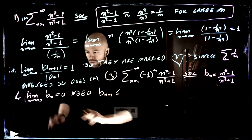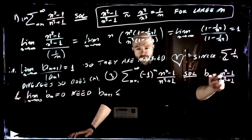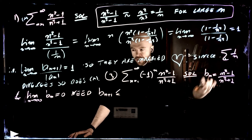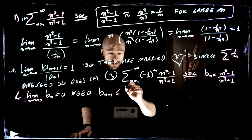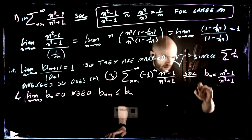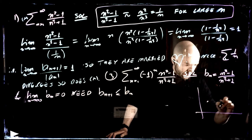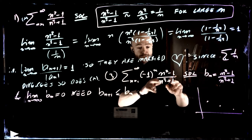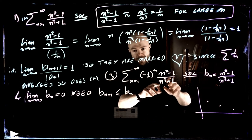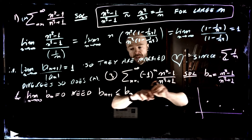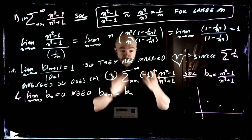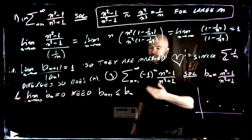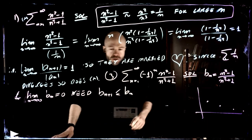We need the terms to go to zero — that's clearly true because we have a power of n to the 3 on the bottom and n squared on the top, so definitely it's going to 0. We also need these terms to be decreasing, right? They have to go down to 0. Our intuition says it should happen because the top is growing slower than the bottom, but we need to check it. We can either do some algebra, or take the derivative.